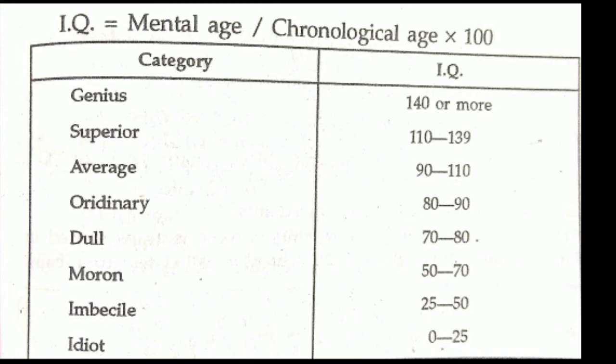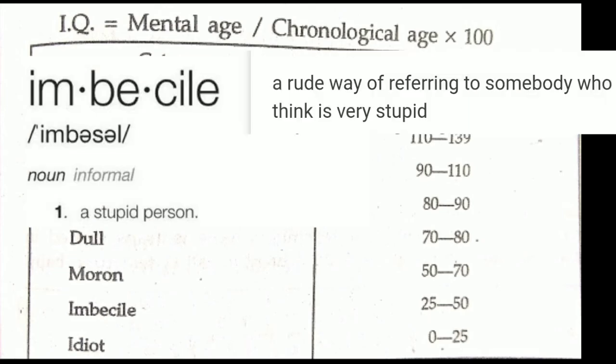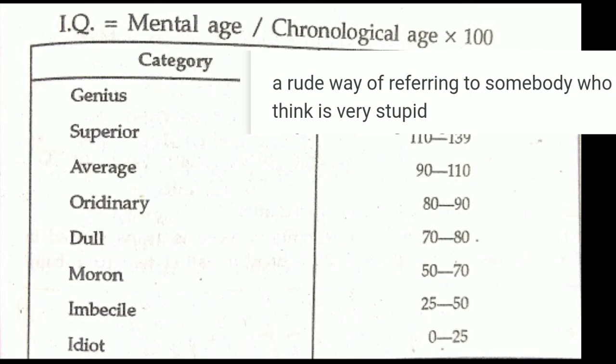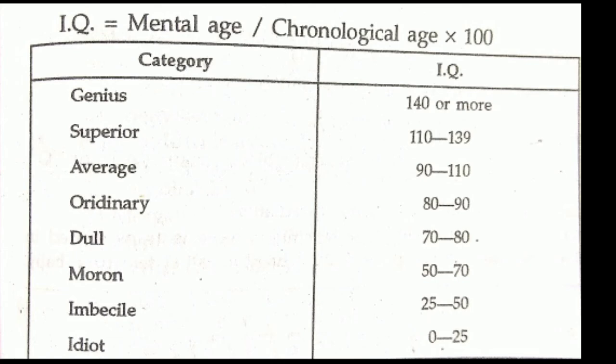IQ categories: IQ 0–25 is the idiot category; 25–50 is imbecile; 50–70 is moron; 70–80 is dull; 80–90 is ordinary; 90–110 is average; 110–139 is superior; and those with IQ above 140 are placed in the genius category. These are the various categories of people depending upon their IQ level.